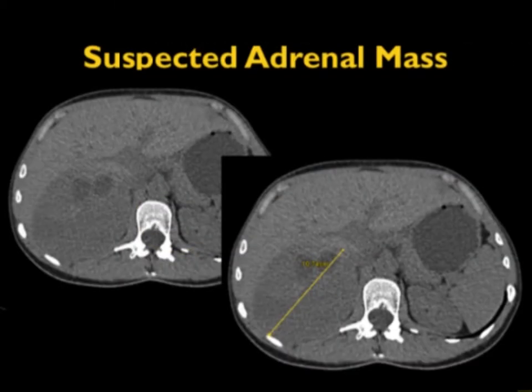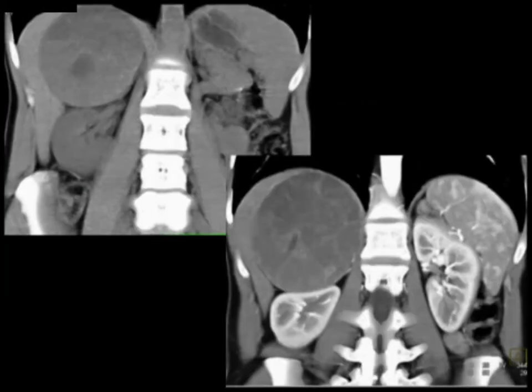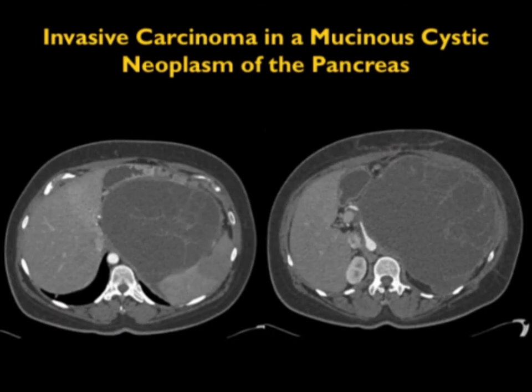Sometimes you're going to be wrong, but it's not an issue. Here's a mass which looks like an adrenal mass — you give contrast and it's necrotic, in a younger patient. It looks like a primary neoplasm: could it be a neuroblastoma or a primary adrenal carcinoma? On coronal views it's definitely not the patient's kidney or liver. This was resected and turned out to be a neurogenic extraadrenal sarcoma.